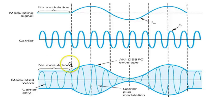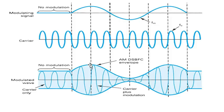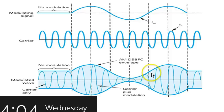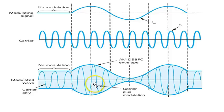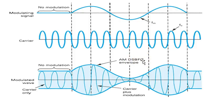In regions with no modulation, the carrier amplitude is not changing. Where the modulating signal has a finite positive amplitude, the modulated signal has an envelope of that shape. This is carrier plus modulation together, and this is said to be AM DSB full carrier — this is the kind of modulation process.